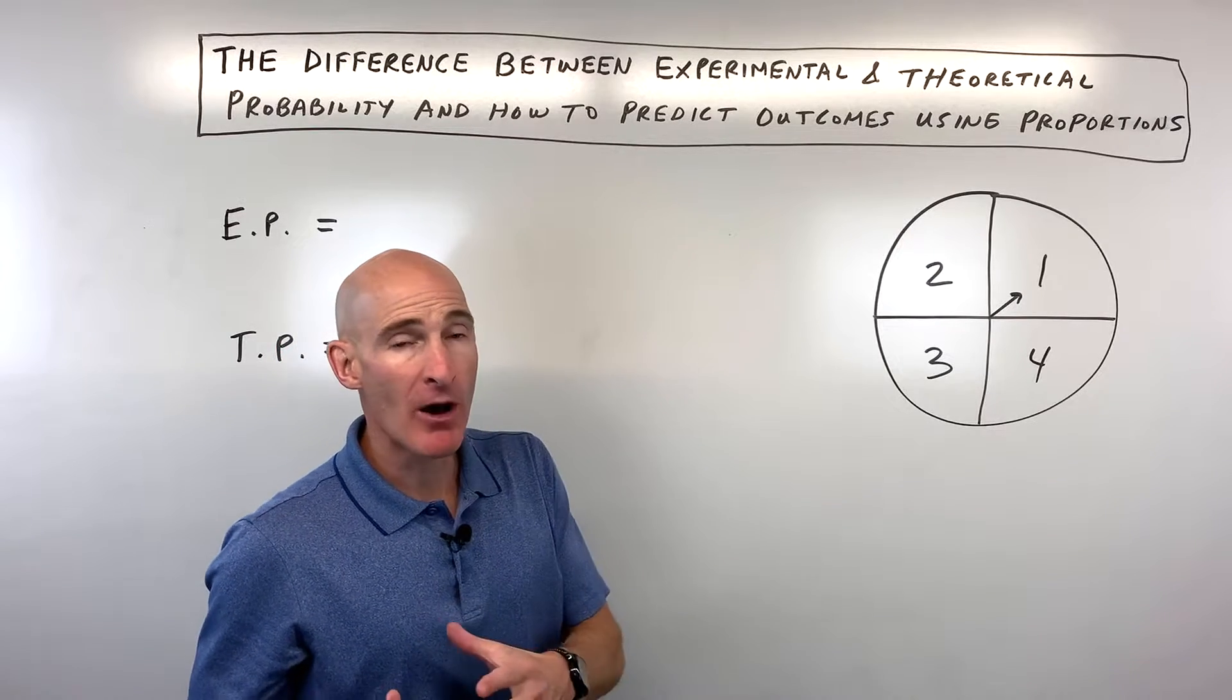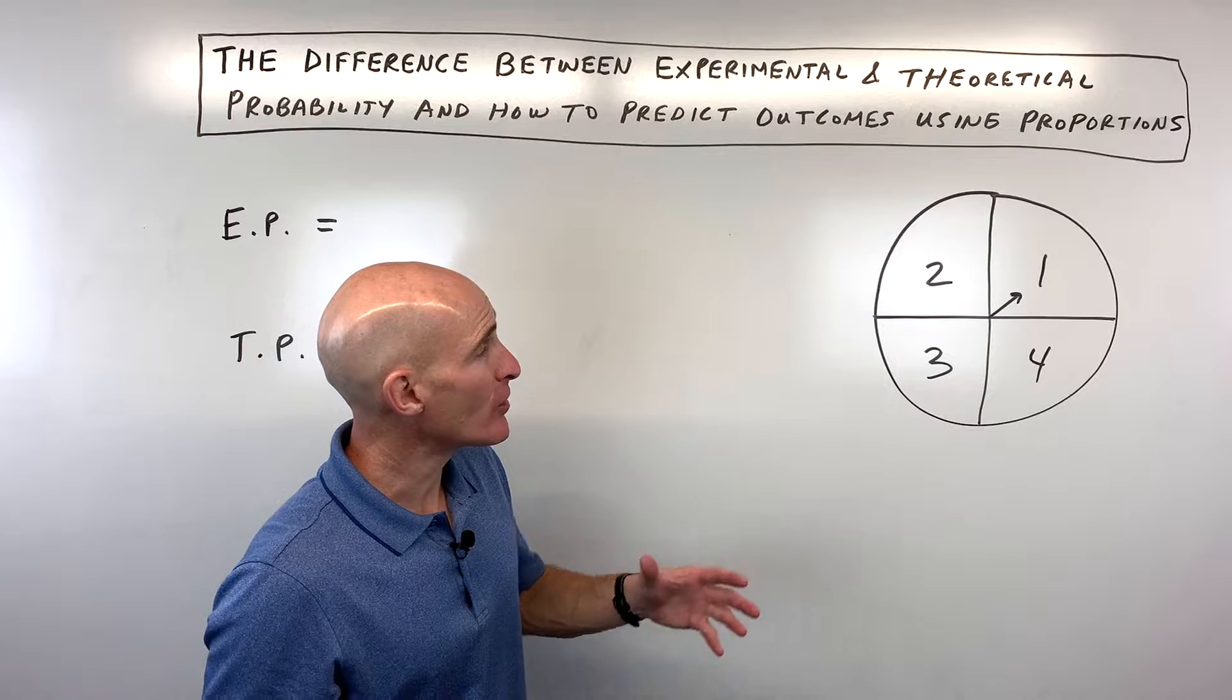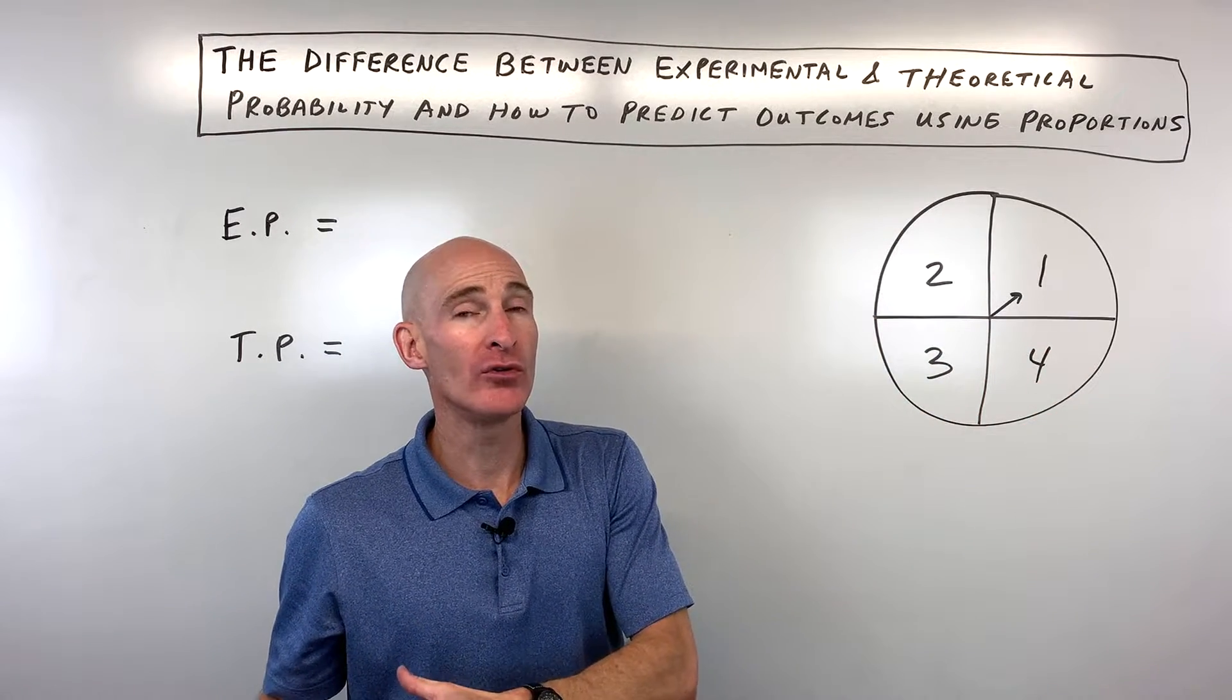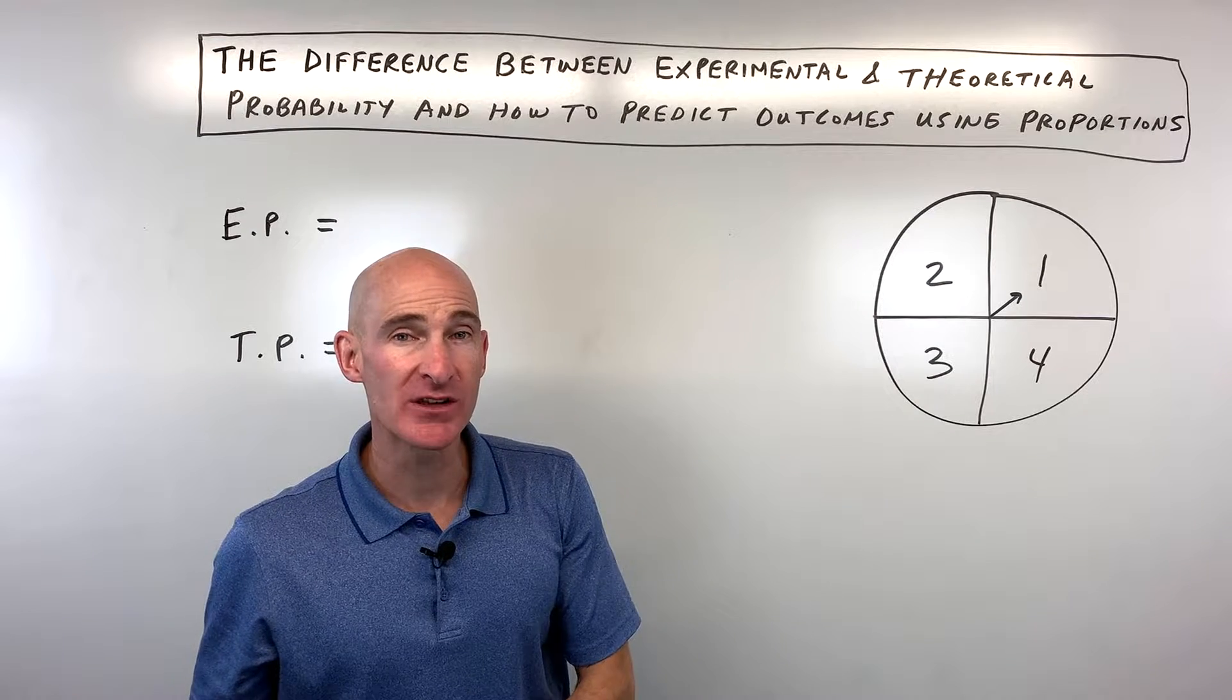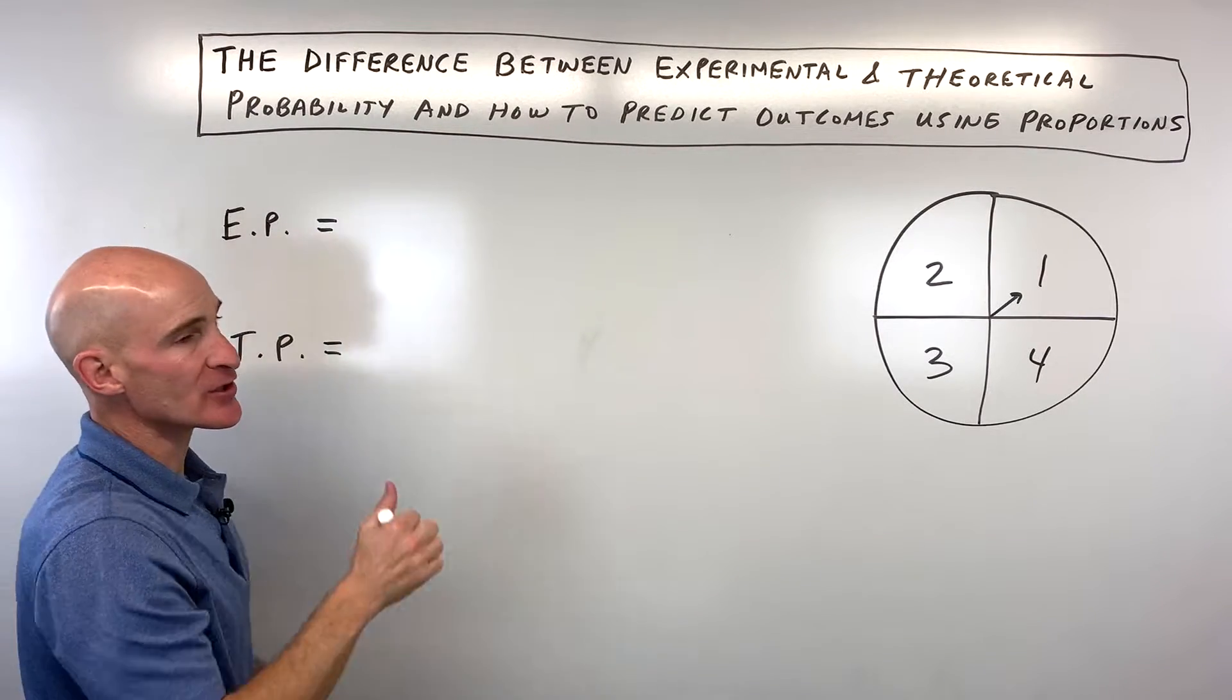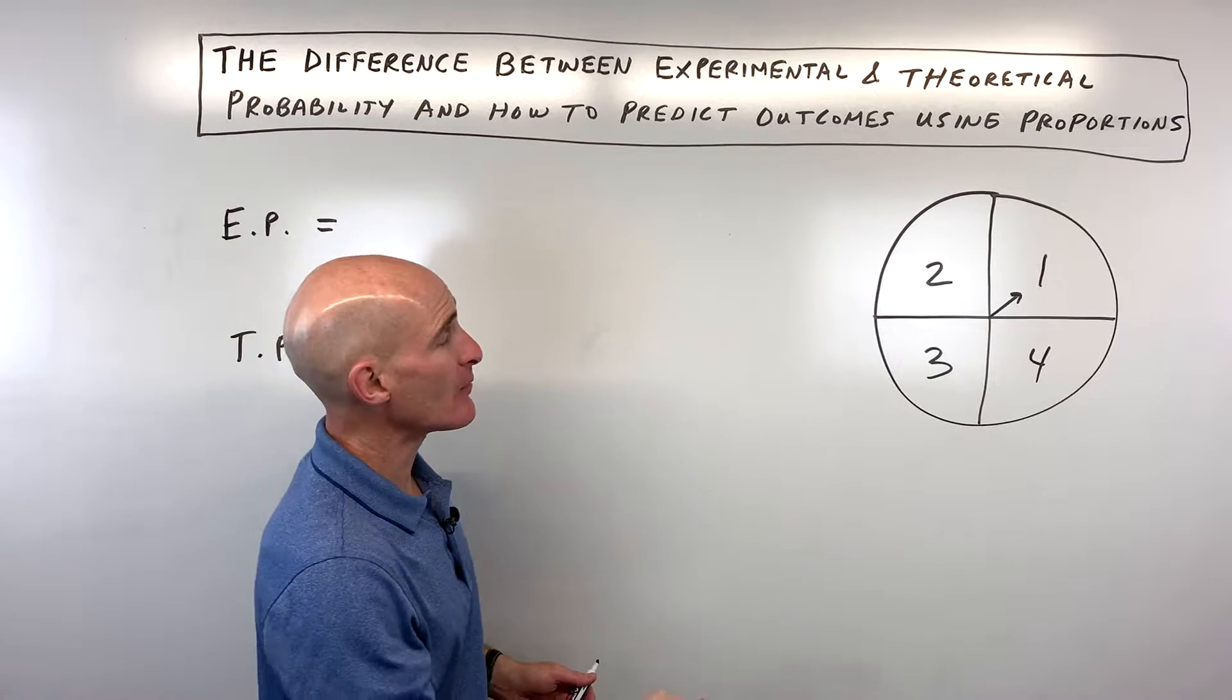When you think about probability, it's the number of successes, like what you want, divided by the total number of outcomes. And so when you do experimental probability, it's just like it sounds, it's like you're running an experiment. Let's say, for example, I spun the spinner 100 times.